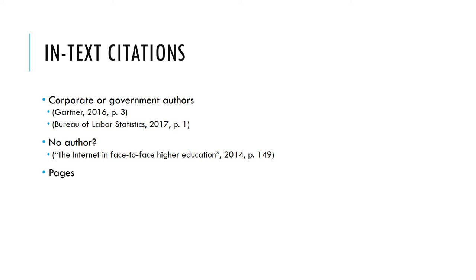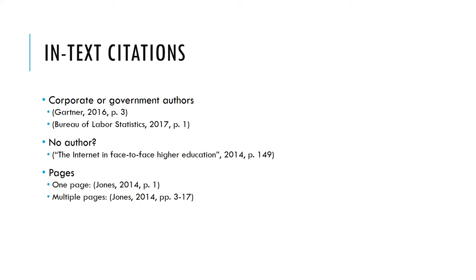If your citation is for one page, you would put one P followed by a period and the page number. If you are citing more than one page, you would put two Ps, a period, and the page range. If you are citing something without page numbers, such as a website, you can leave that out.